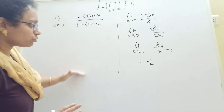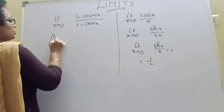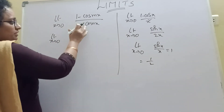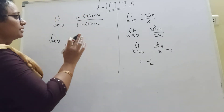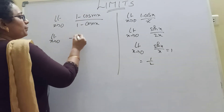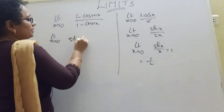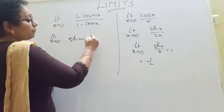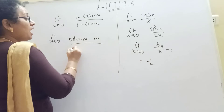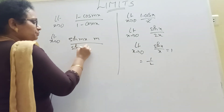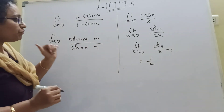Similarly, this is also: the limit is 0. There is a 0 by 0 problem. We use sin x and continue. Give it sin Mx and sin Nx. In order to take this formula, we manipulate it.